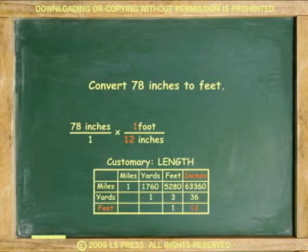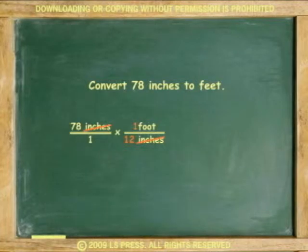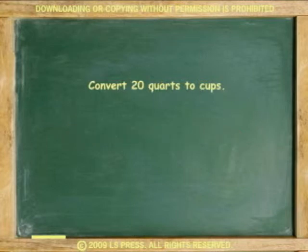In this case, it is 12. Four, cancel the name of the given units. Multiply and divide to get the answer. 78 times 1 is 78. 1 times 12 is 12. 78 divided by 12 equals 6.5 feet, which are the units left in the proportion.